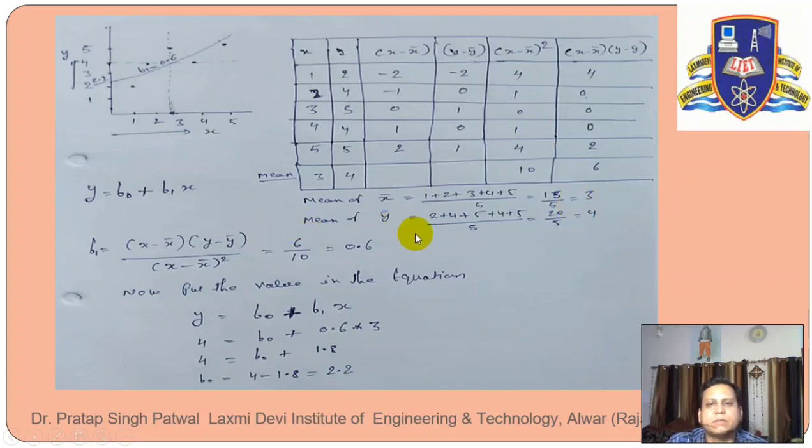We start with the sum of values, divide by 5. Then we have mean of x which is 3 and mean of y which is 4. Now let's calculate x minus x bar for each point. For the first point, x is 1, so 1 minus 3 is minus 2. Similarly we calculate y minus y bar. Y is 2 and y bar is 4, so 2 minus 4 is minus 2. Then we calculate all the values.